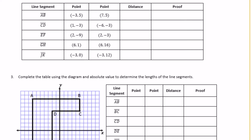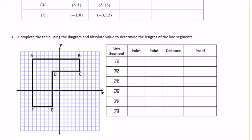Let me use this as an example. So if we have 3, 5 and negative 2, 5 — it forms a horizontal line because they're both always going to be crossing 5 on the y-axis. So if the y's are the same, they're crossing the y-axis making a horizontal line.